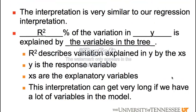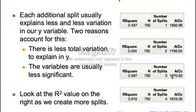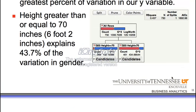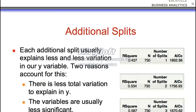We have the interpretation. Let's look at the R-squared on this tree. The R-squared is 43.7, so 43.7% of the variation in gender — which is our Y — is explained by the tree or by the variables in the tree. This is a model; what we're doing is creating a model that explains gender. So the R-squared is the percent of variation in gender explained.